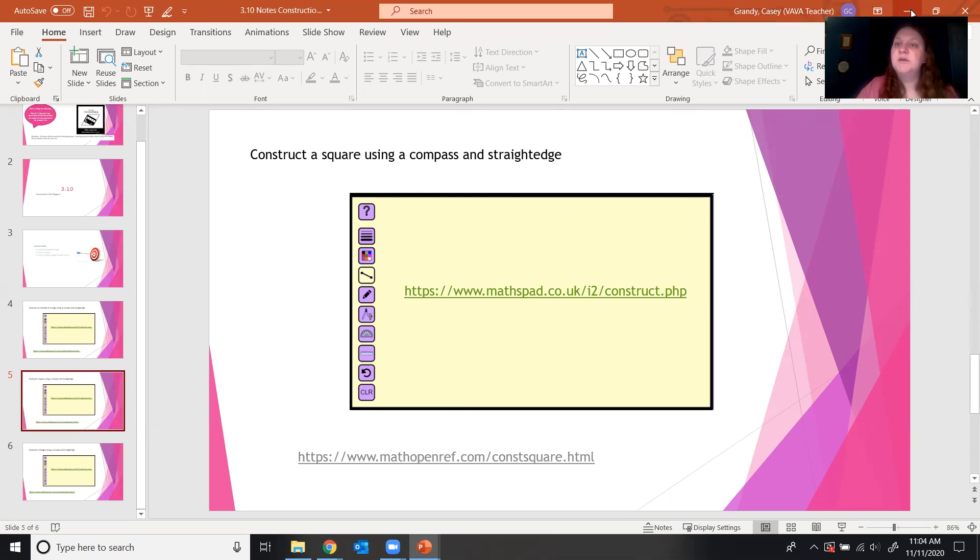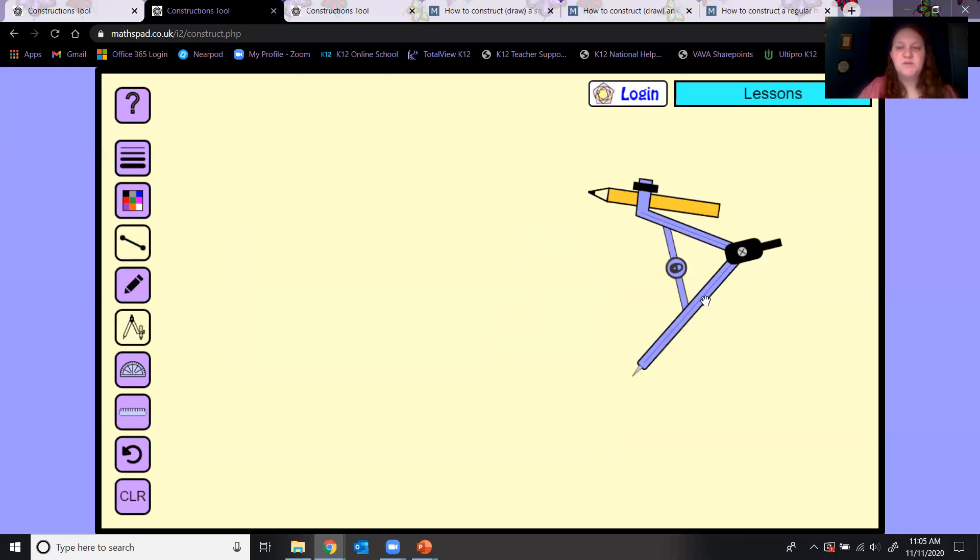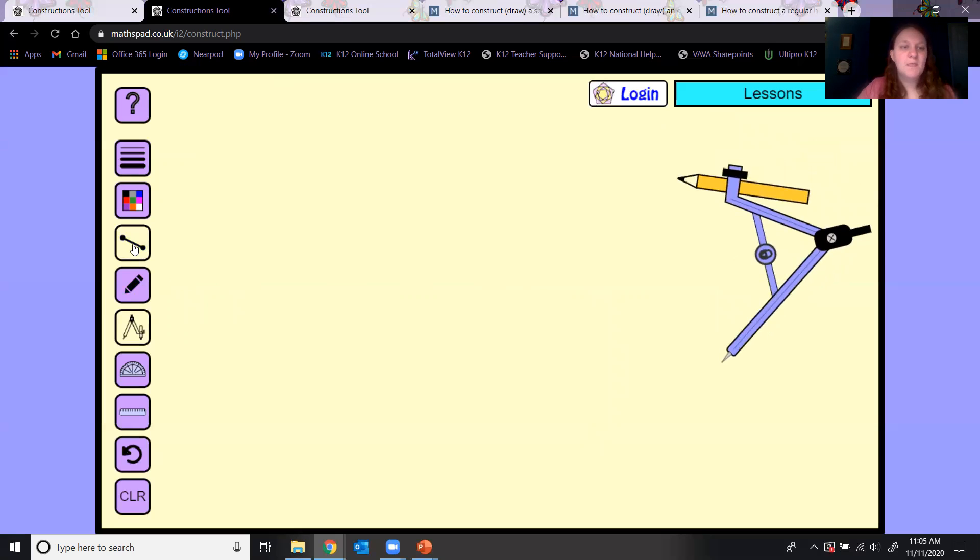Then we've got a square. You need to remember a little bit about squares from middle school or elementary school. They're going to give you a side. You're going to have to give yourself your own side here. We're going to say here side AB. This is one side of a square, construct the rest. One thing you need to remember about a square is it has all 90 degree angles.